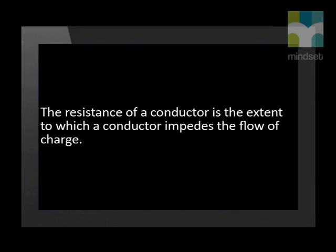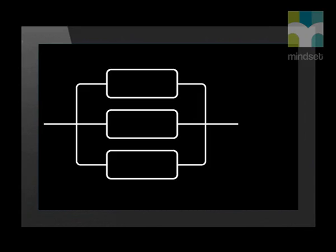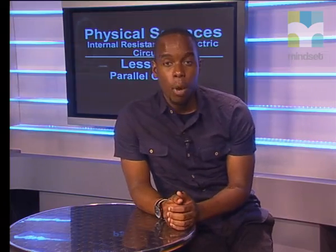The resistance of the conductor is the extent to which a conductor impedes the flow of charge. In a parallel network, the current is divided between the resistors. The highest amount of current will move through the smallest resistor while the smallest amount of current will move through the biggest resistor.